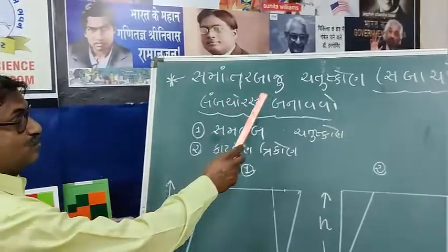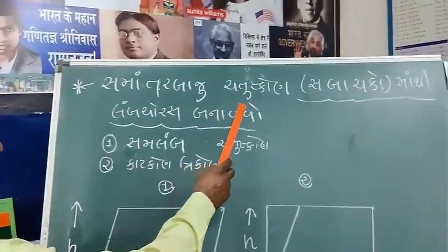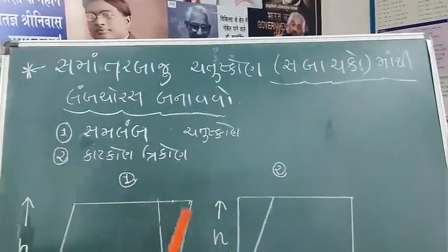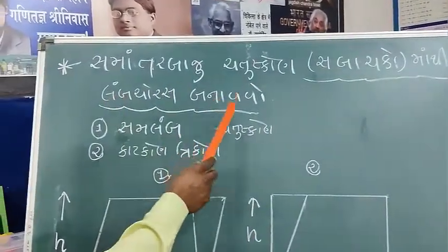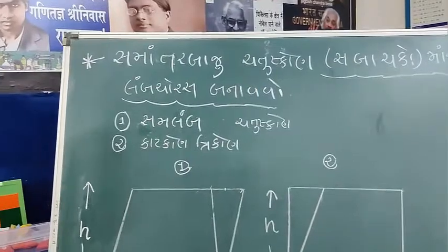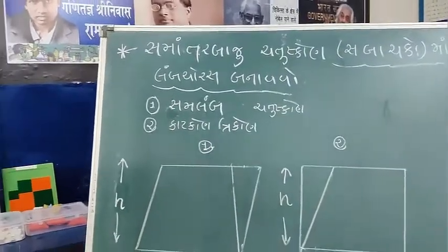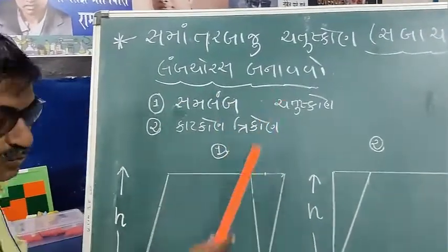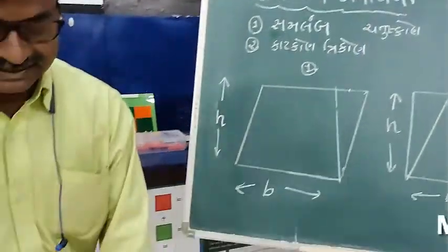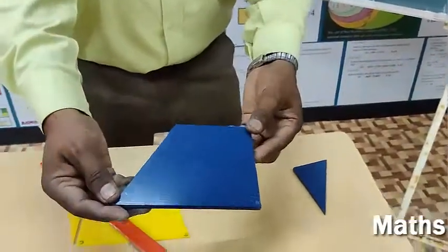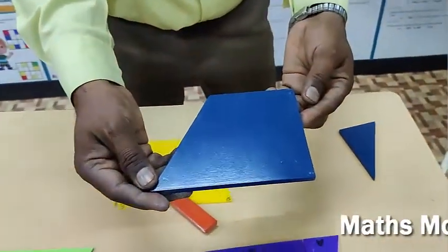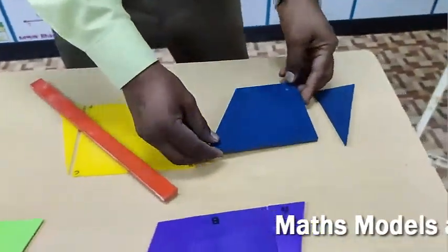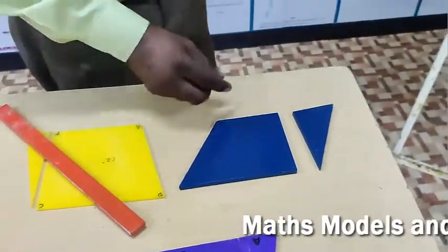We are going to make a 4 score. This is about 10 seconds and this is about 20 seconds on.